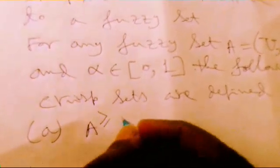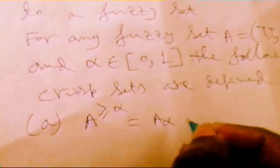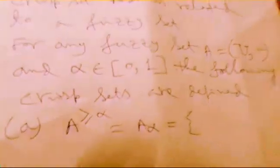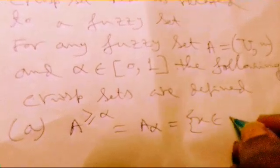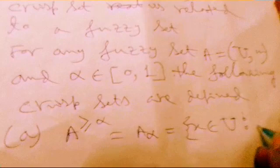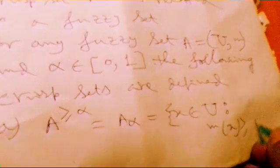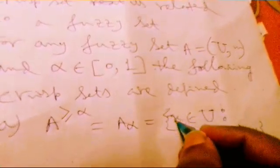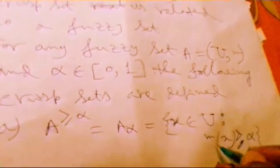If we consider A in this notation, A greater than alpha or simply we write A alpha, whatever may be the notation we write, and if we consider X be the element that belonging to the universe set. And such that, this μx is the membership of X, always greater than or equal to alpha. Here it is observed, as per our notation greater than or equals to alpha, whatever may be you write. If X be the element in the universe set and this μx that is a membership must be greater than or equal to alpha.